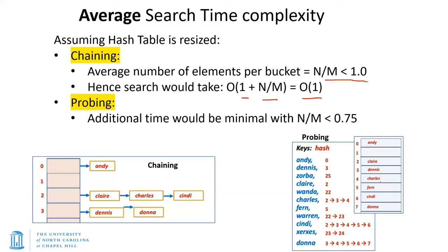For probing, n upon m is even smaller since the threshold is slightly lower — it's a closed scenario. But in any case, as long as n upon m has a constant bound, the search takes O(1). That's the complexity for doing a search in both chaining and probing.